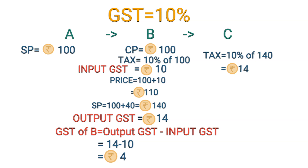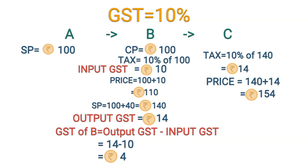Let us verify: the first sale GST was Rs.10, the second sale GST was Rs.4, so the total GST is Rs.14. And this Rs.14 is ultimately paid by the customer C, who buys the goods for Rs.140 and pays 10% tax, that is Rs.14, so he actually pays Rs.154. That Rs.14 is made up of Rs.10 (B's Input GST) and Rs.4 (the balance B pays to the government). So Rs.4 goes to the government as B's GST.